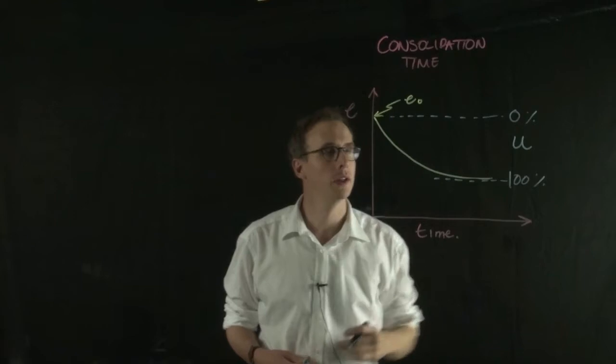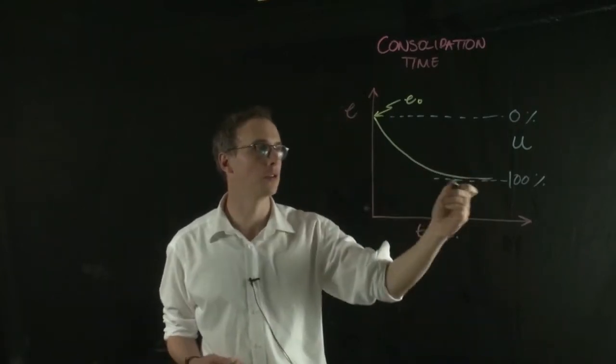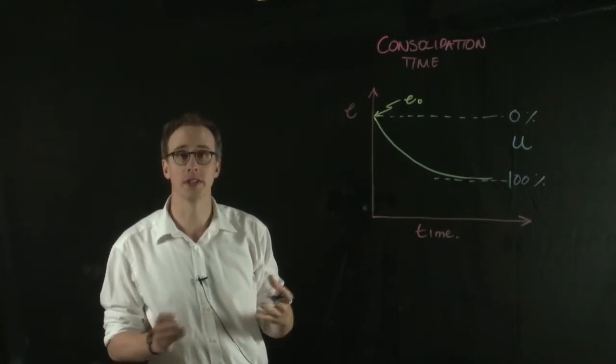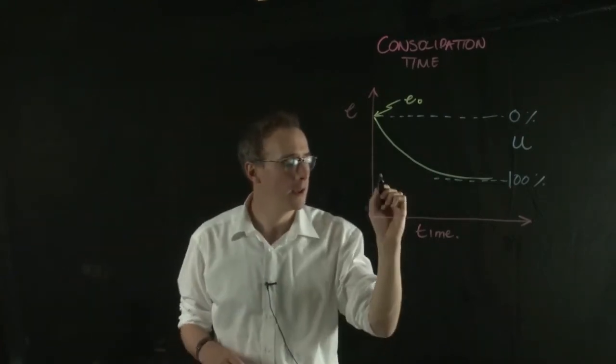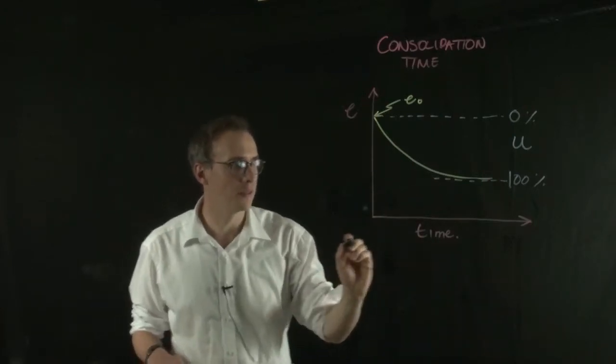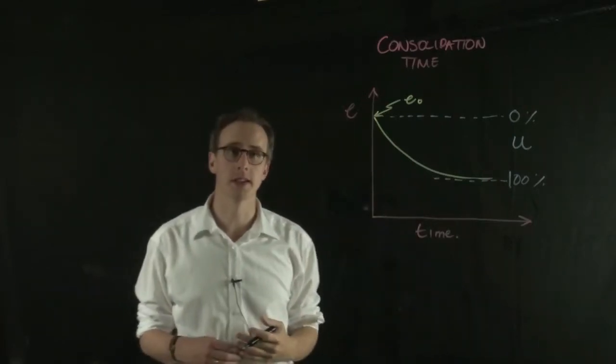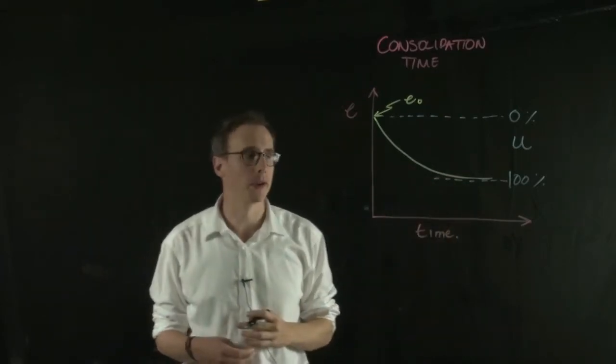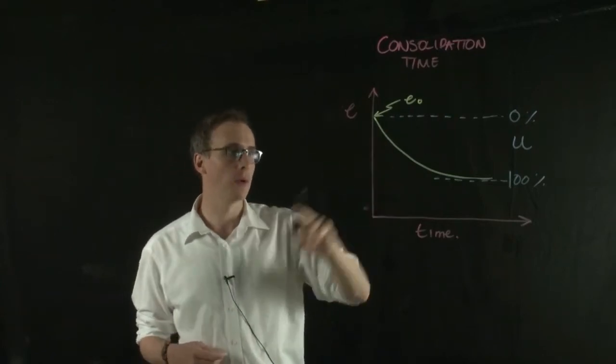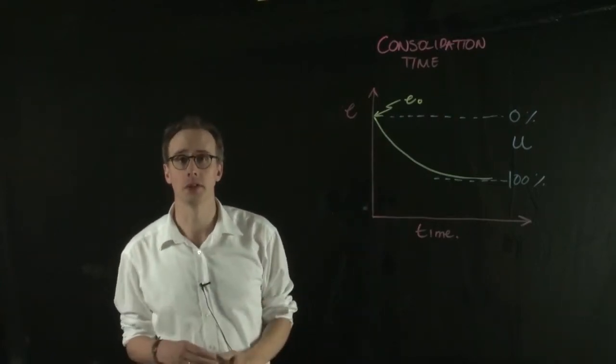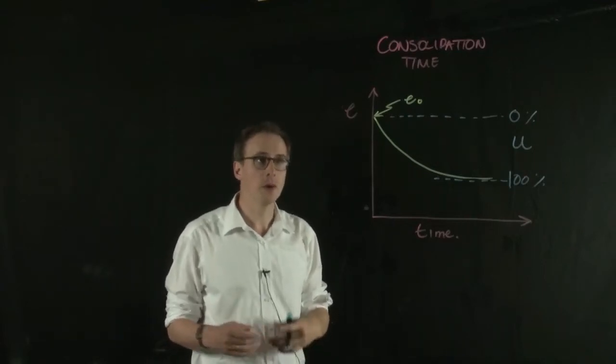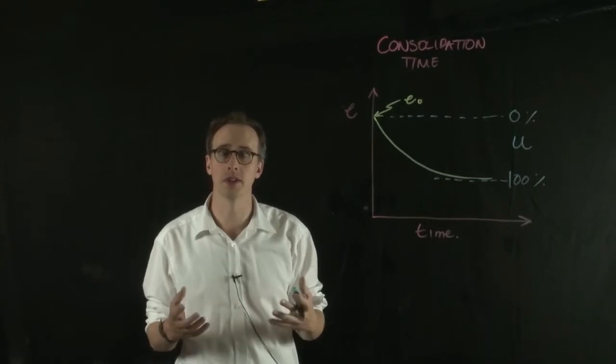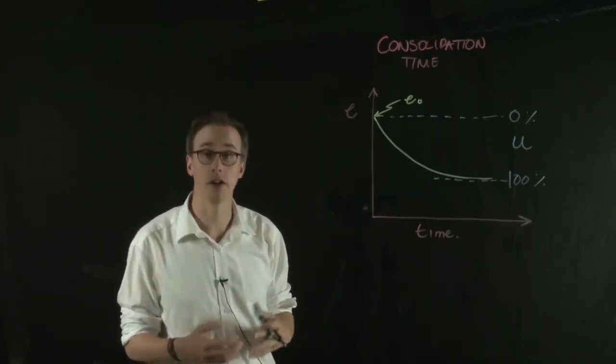That's the value U. The value U can be between 0 and 100%. We can ask two questions of this, or the same question in two different ways. We can say, given a certain length of time, let's say 10 days, what would be the degree of consolidation that we would expect? Alternatively, we might say, how long does it take for a soil to reach a certain degree of consolidation? Those are the two different ways we're interested in asking it and trying to find answers for.